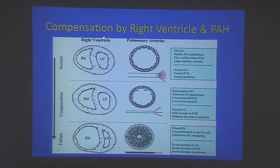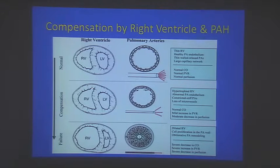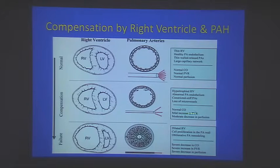The right ventricle starts compensating by increasing wall thickness to generate higher PA pressure. The endothelium thickens and cardiac output remains normal despite increased pulmonary vascular resistance. When the RV fails, thinning occurs, and RA pressure and RV end-diastolic pressure rise.